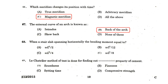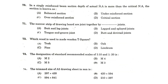When a stair slab spans horizontally, the bending moment is equal to WL²/8. The Le Chatelier method of test is done for finding out the soundness property of cement. In a singly reinforced beam section, if the depth of the actual neutral axis is more than the critical neutral axis, the section is known as an over-reinforced section.